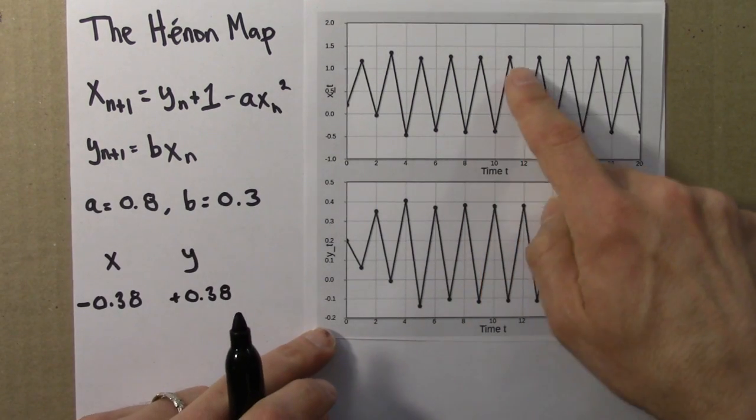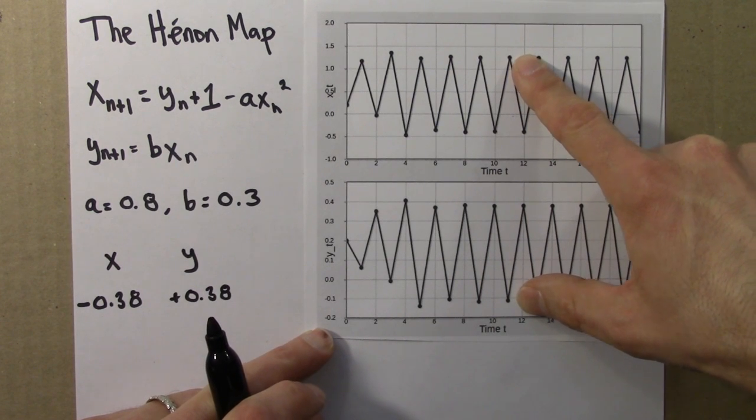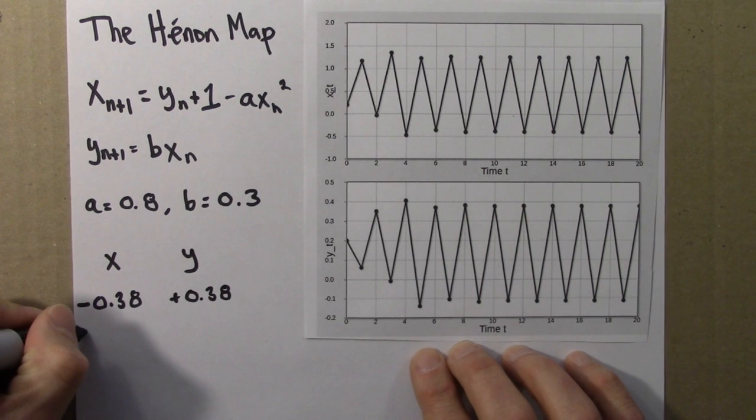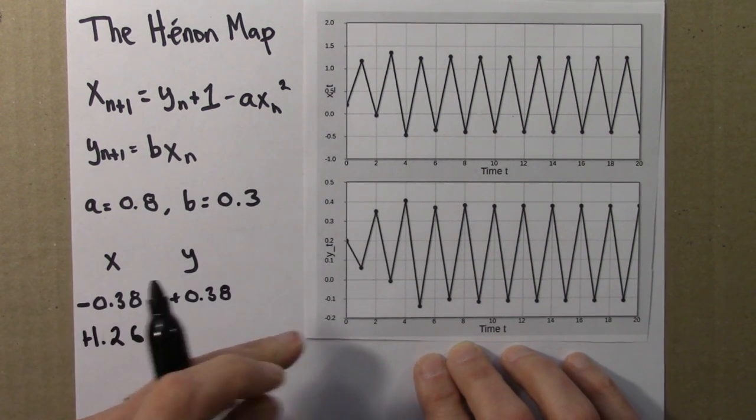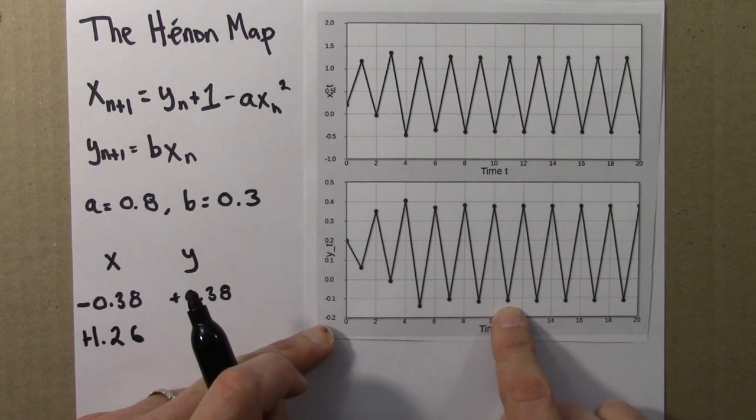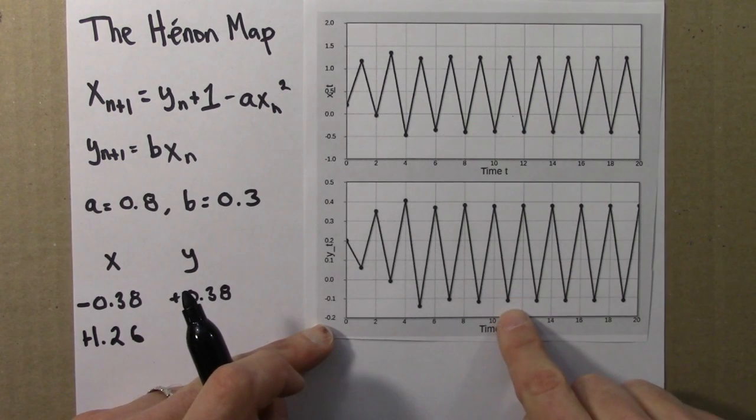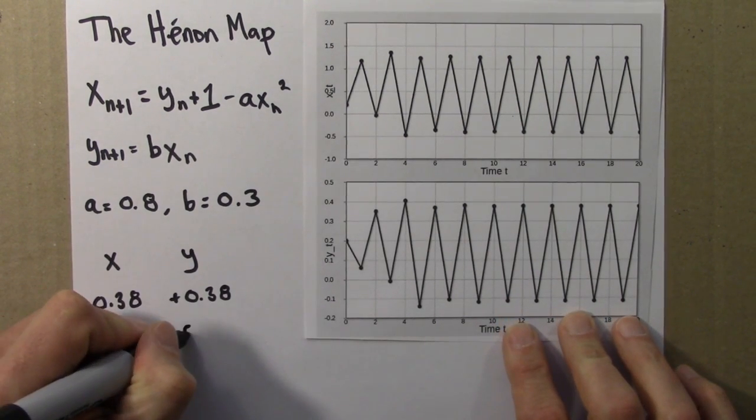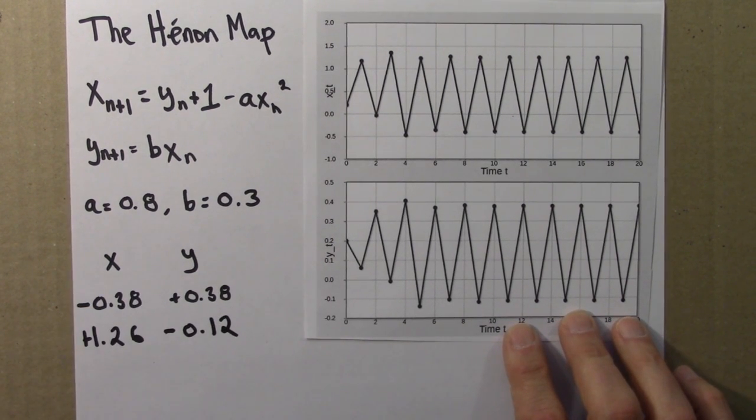And then the large x value, that goes with the small y value, the large x value, it's about 1.3, turns out it's about 1.26, and then this, so large x small y, this value turns out to be about minus 0.12.